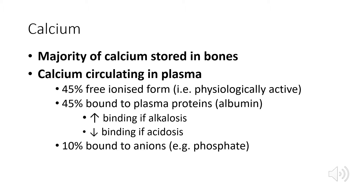The binding of calcium to albumin also changes depending on pH. There's also a small proportion of calcium bound to anions like phosphate and citrate, so if they're in excess in the blood — for example in hyperphosphatemia — you can get a resulting hypocalcemia, which can be clinically important to note.